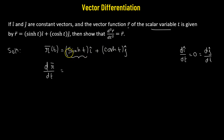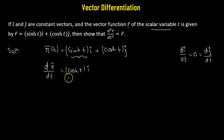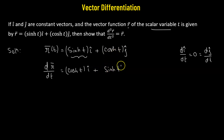We take the derivative of the hyperbolic sine function, which gives us hyperbolic cosine of t — that is the x-component. For the y-component, the derivative of hyperbolic cosine of t is simply hyperbolic sine of t times j-cap. So the first derivative dr/dt equals cosh(t) i-cap plus sinh(t) j-cap.